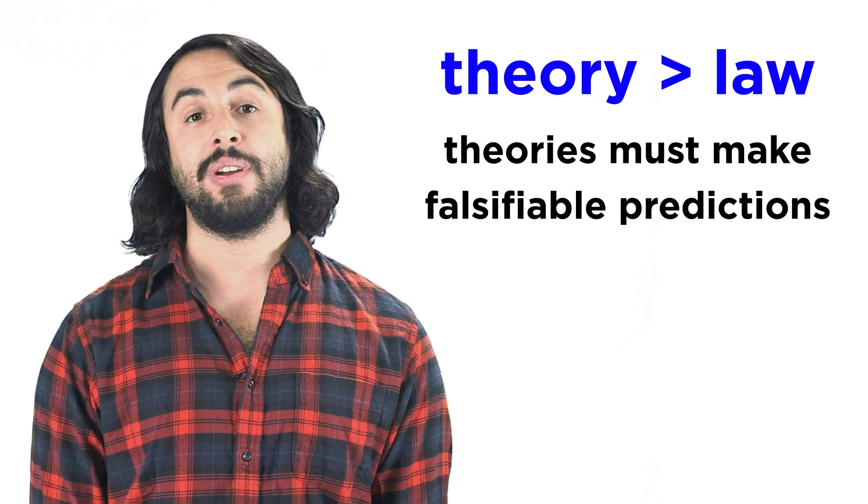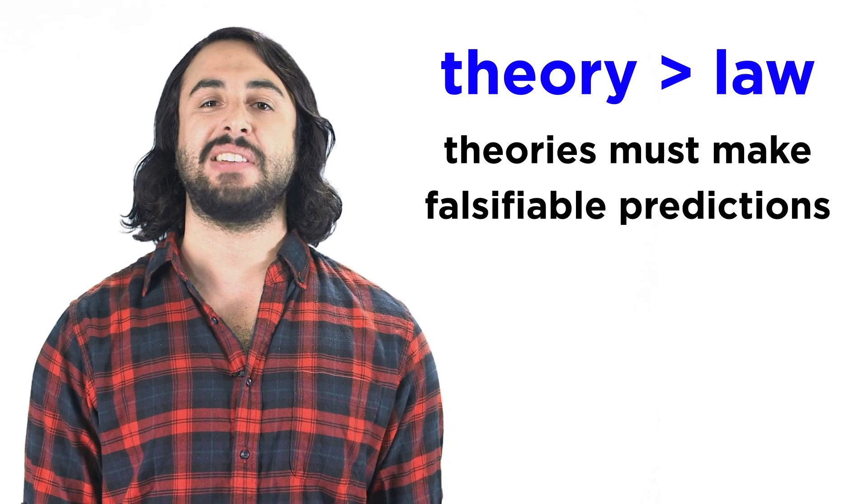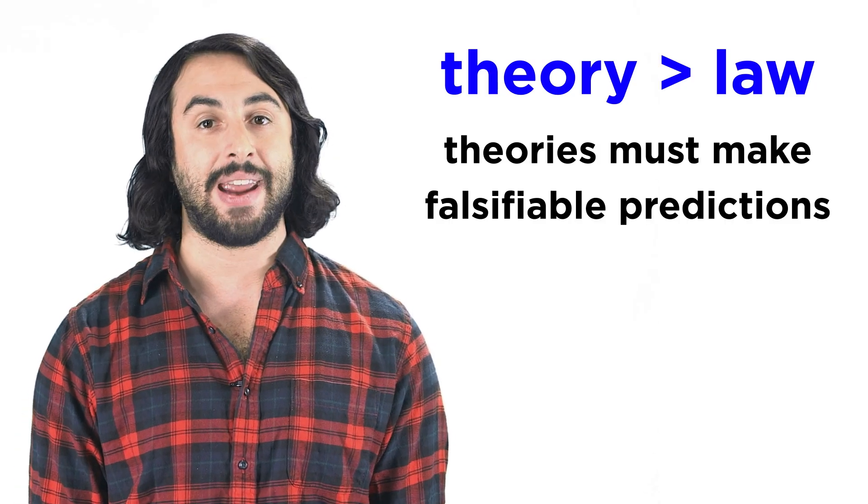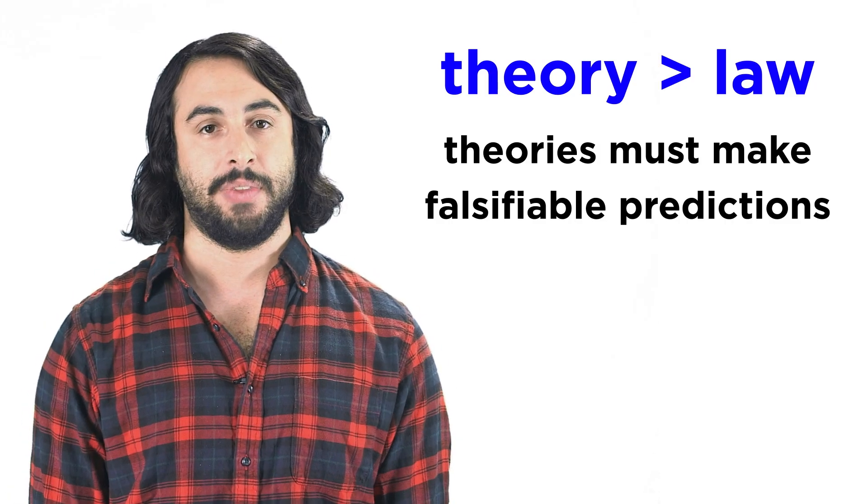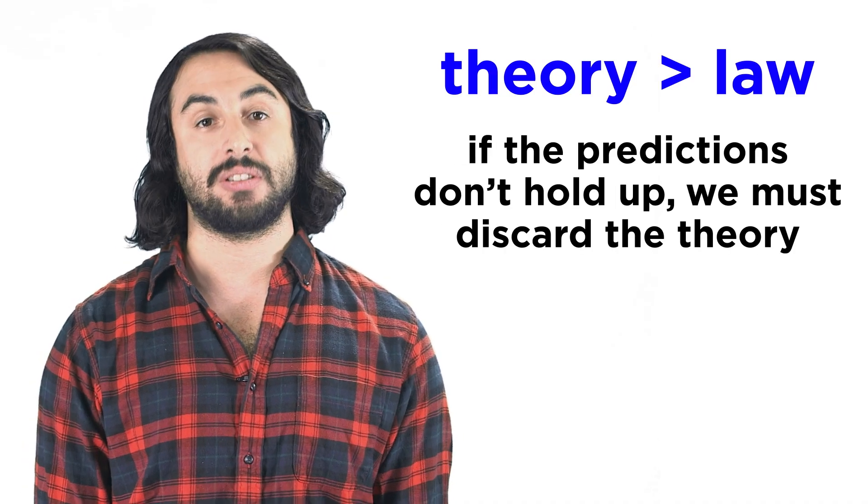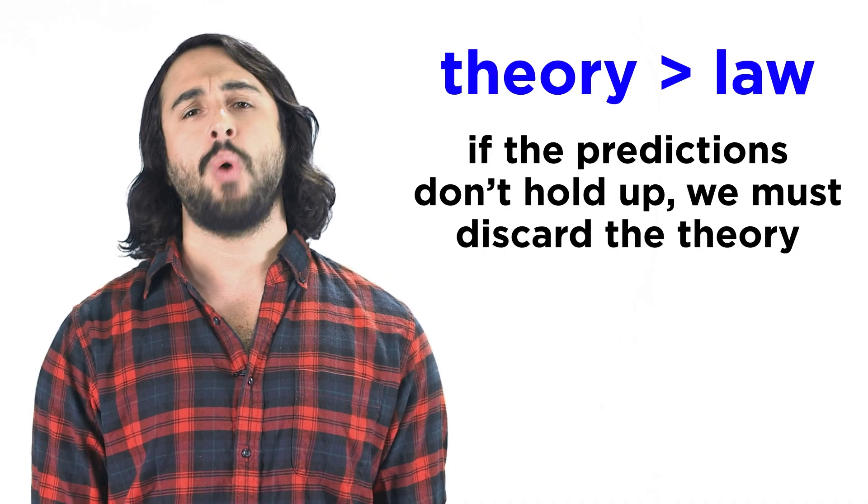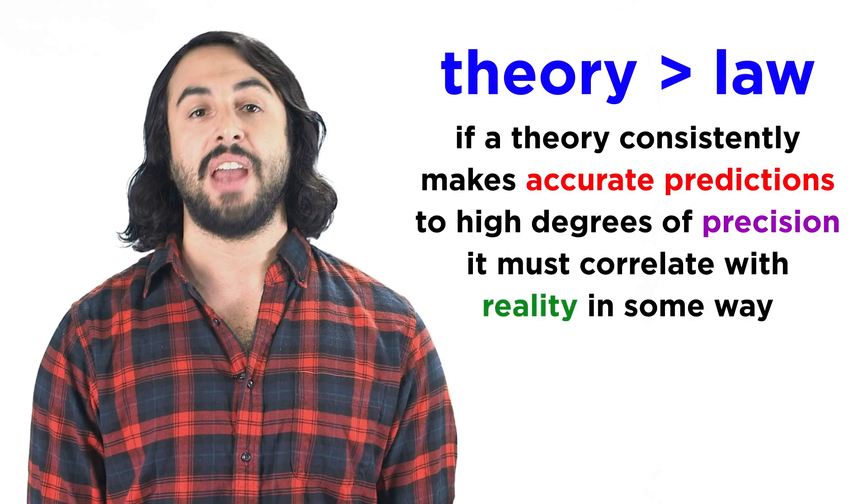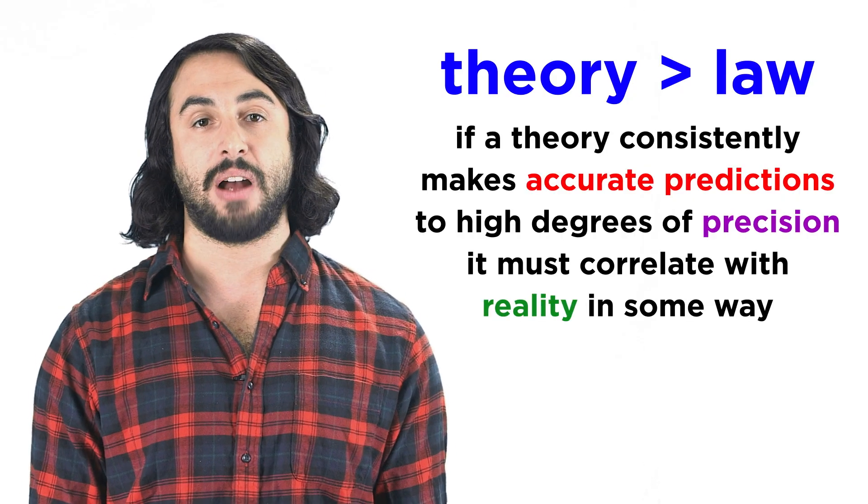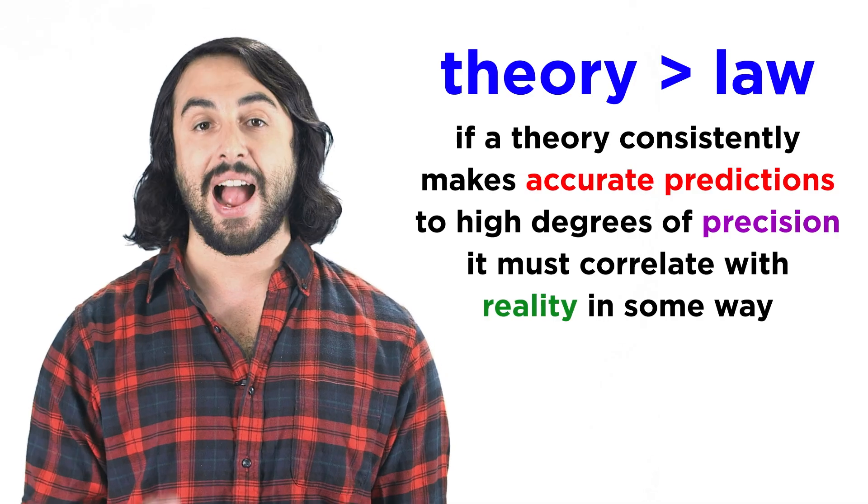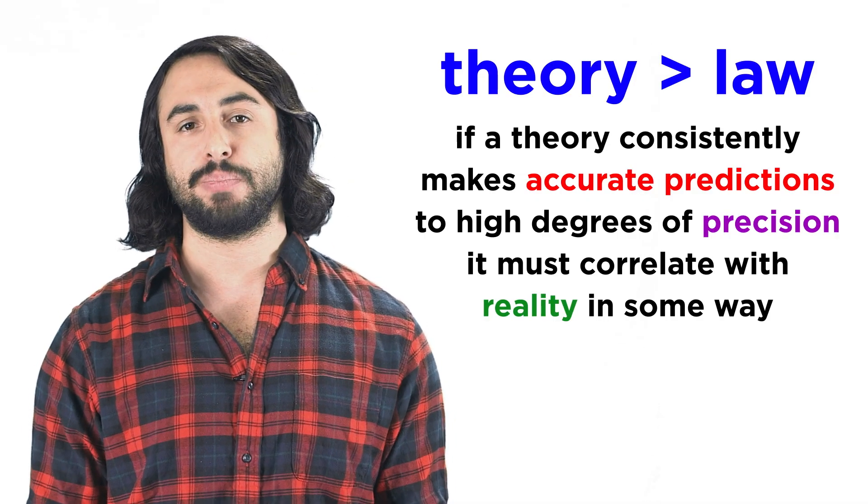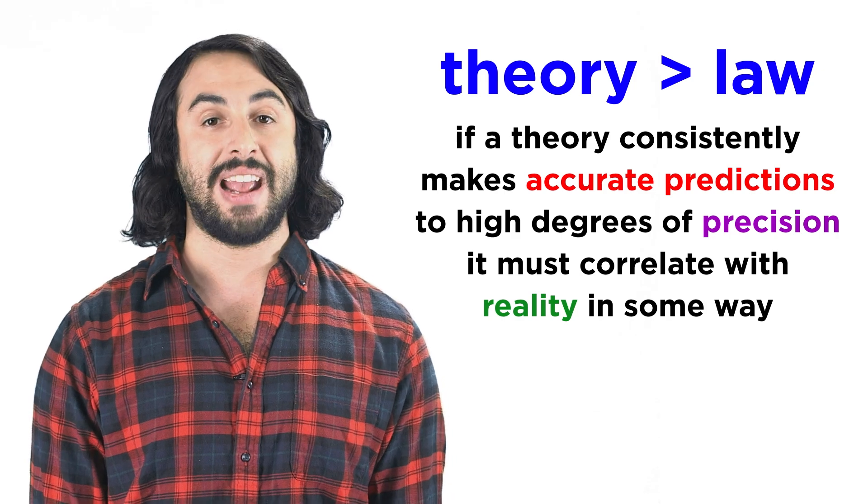Furthermore, theories must make predictions. If it doesn't make concrete, quantitative, falsifiable predictions about reality, it's not science. And if a theory makes predictions that turn out to be false, then we have to discard the theory. That's what makes science so powerful. If we find a theory that correlates data, and every prediction it makes about future events is true and to high degrees of precision, then that theory must have some explanatory power about the nature of the universe.